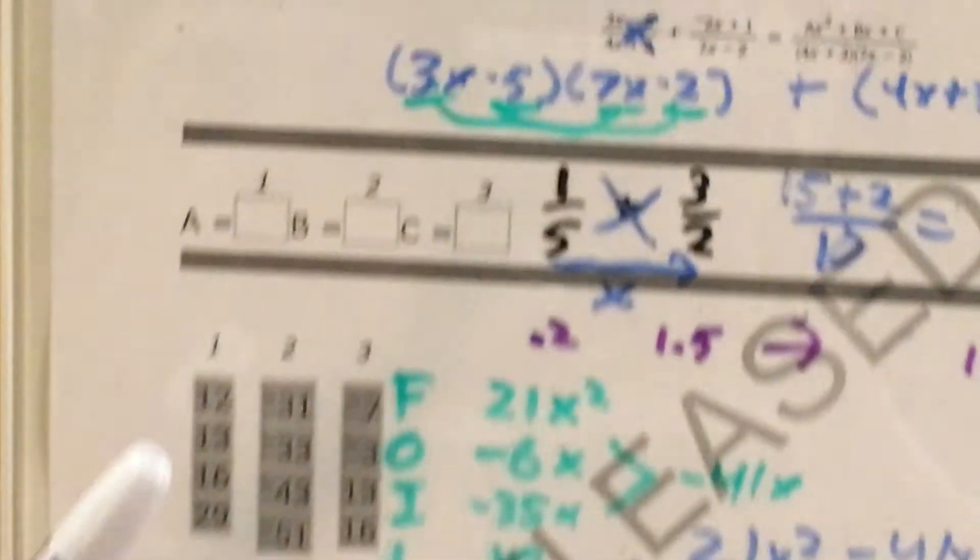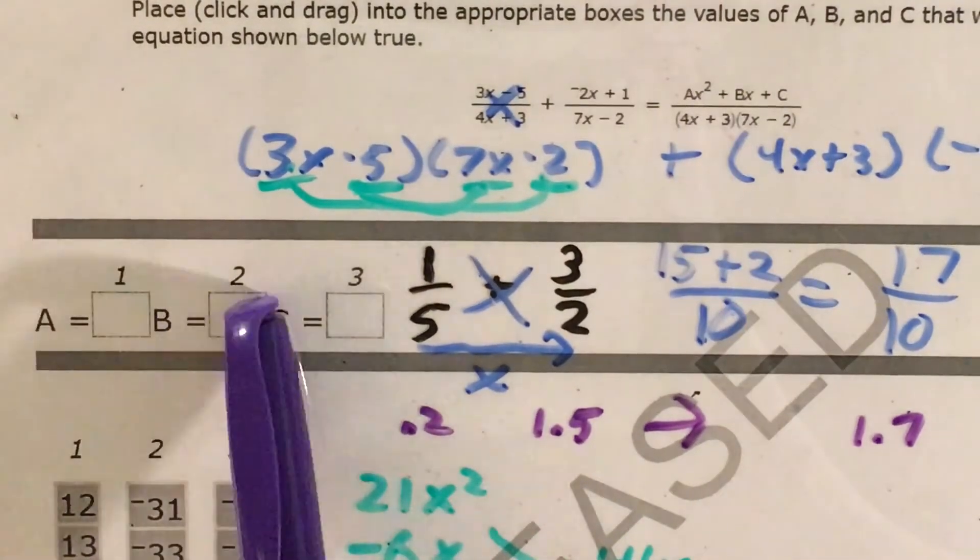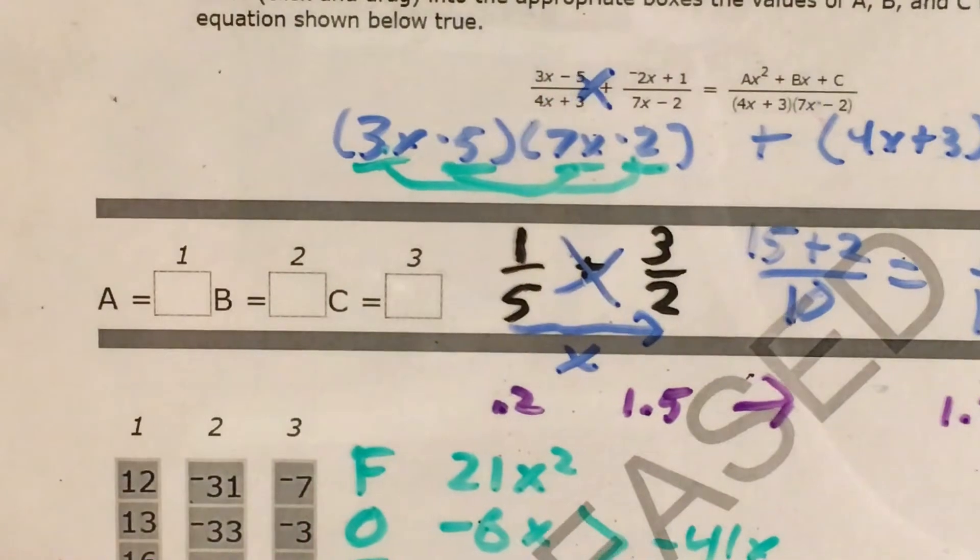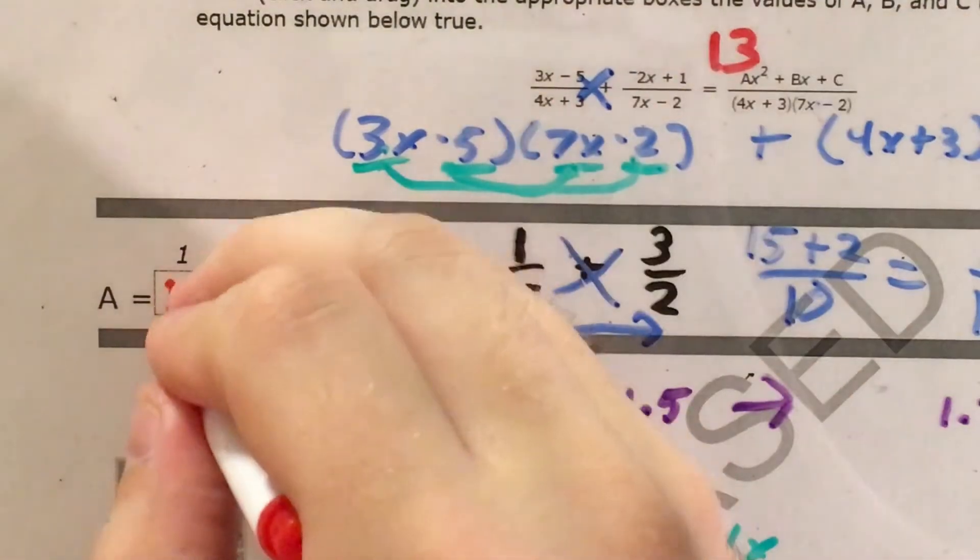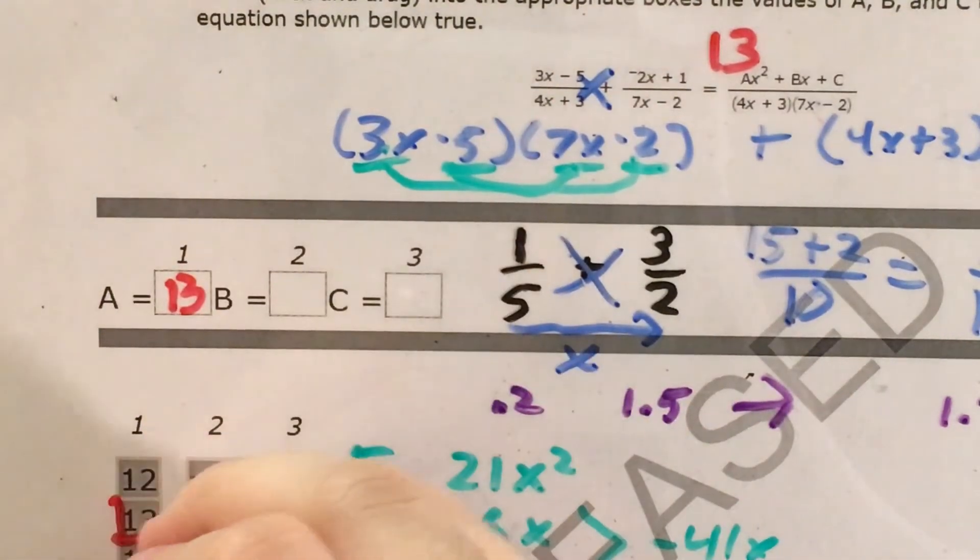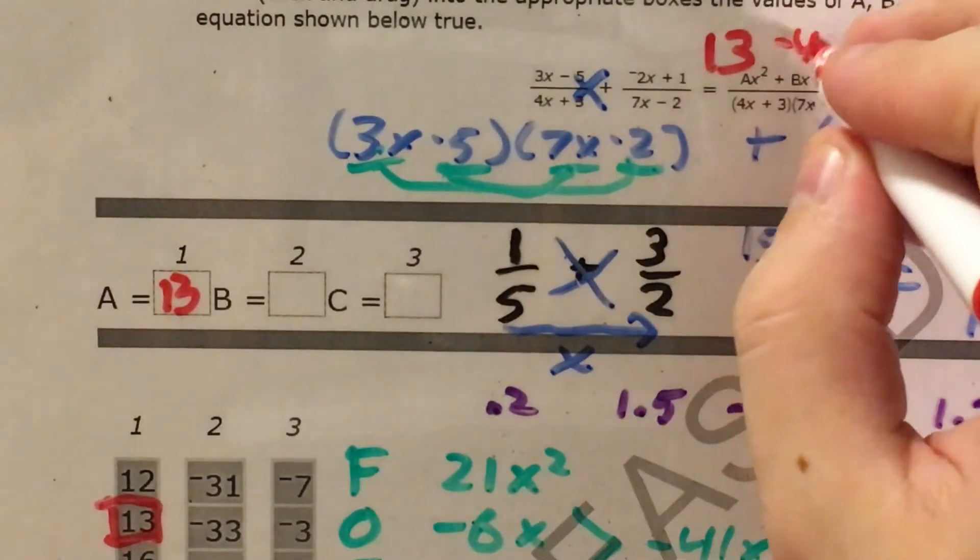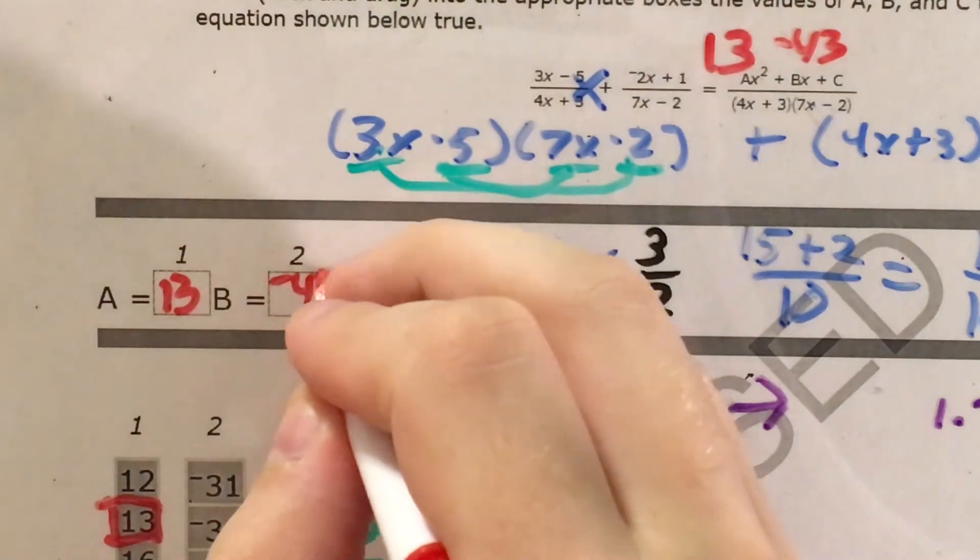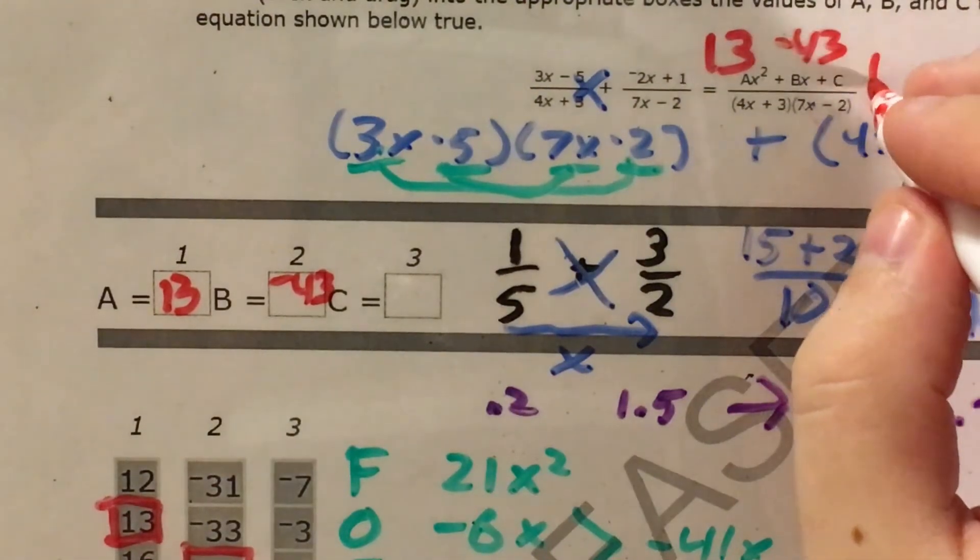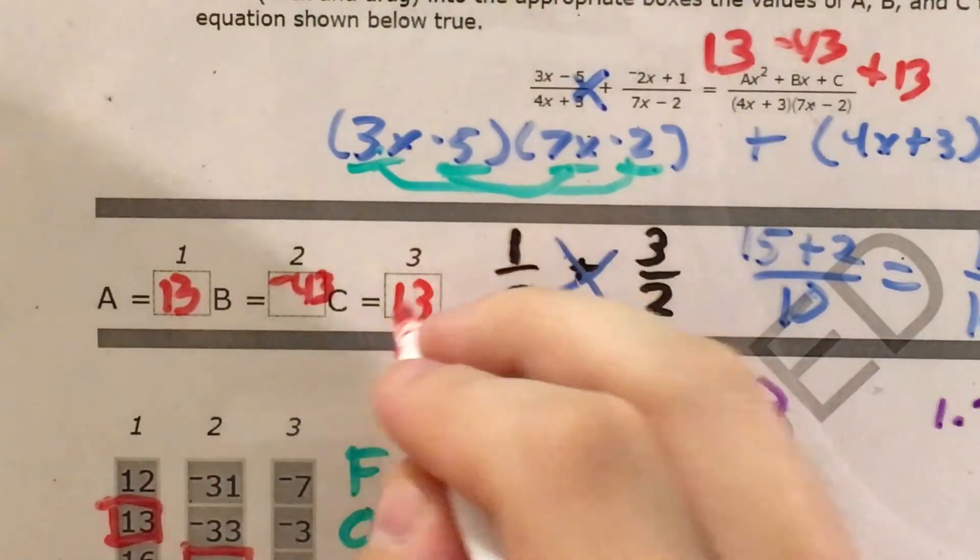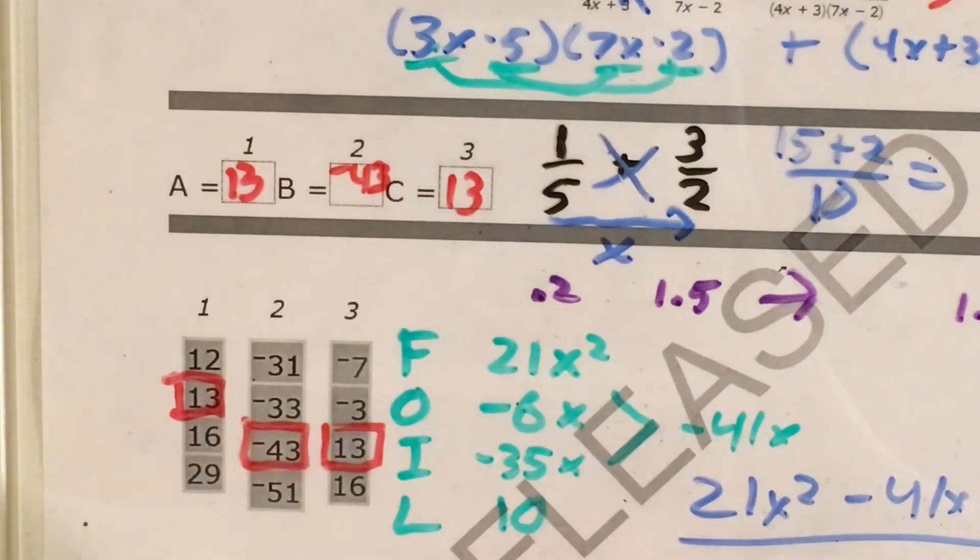And now if I look back at the way this problem was phrased, I'm supposed to find the numbers in this polynomial and drag them in here. So I ended up with, for ax squared, I ended up with a was 13. So this is 13, and I would want this box. For b, bx, this ended up being negative 43. So I write negative 43 here, and that's the box I want. And then for c, the constant, that was just plus 13. So my c would just be 13, and I would choose my 13 box.